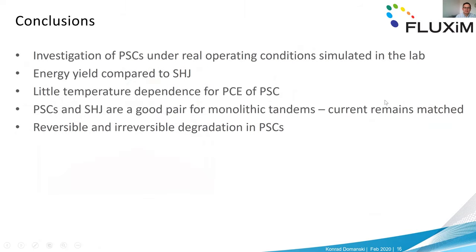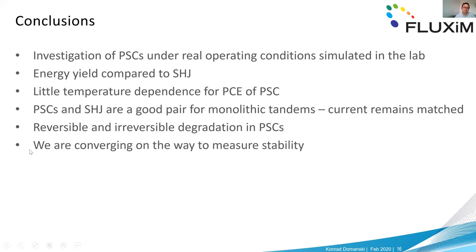Conclusions: We investigated perovskite solar cells under simulated real operating conditions in the lab, avoiding parasitic effects of outdoor testing. We compared energy yields of perovskites and silicon heterojunction, found little temperature dependence for perovskites unlike silicon, and confirmed perovskites and silicon heterojunction are a good pair for monolithic tandems because matched currents remain matched. We also observed both reversible and irreversible degradation of perovskite solar cells.